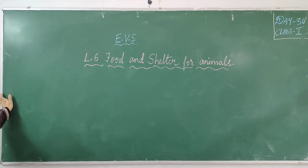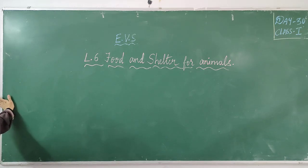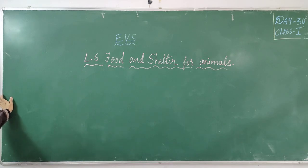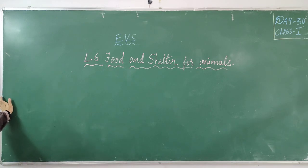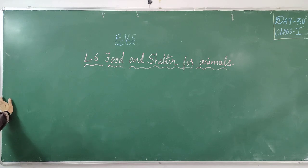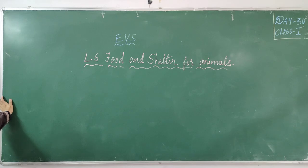Some animals eat the flesh of other animals, like lion, tiger, crocodile — they kill other animals and eat their flesh. And some animals eat both plants and flesh, like crow. Even bear also eats plants and the flesh of other animals — especially it eats fish. So this is what we studied in the previous class: the food of animals.